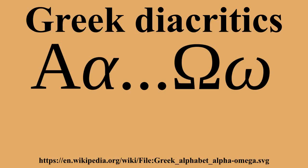Upsilon at the beginning of a word always takes rough breathing. Thus, words from Greek begin with hy-, never with y-. The smooth breathing marked the absence of h. A double rho in the middle of a word was originally written with smooth breathing on the first rho and rough breathing on the second one. In Latin, this was transcribed as rrh.